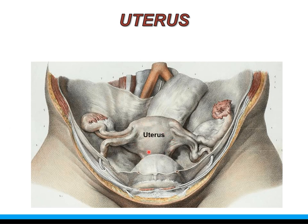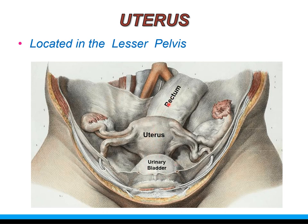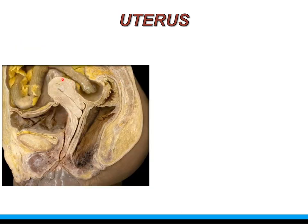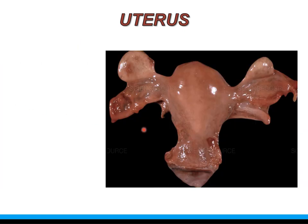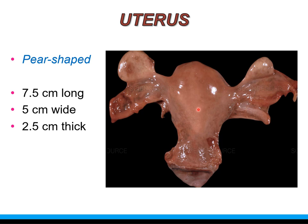The uterus is a female reproductive organ located within the lesser pelvis, below the pelvic brim. It is a midline structure that lies behind the urinary bladder and in front of the rectum. It is situated obliquely within the pelvic cavity, as observed in a sagittal section. It is a thick-walled hollow muscular organ that opens below into the vagina. It is a pear-shaped structure measuring 7.5 cm in length, 5 cm in breadth, and 2.5 cm in thickness, weighing about 30 to 40 grams on average.